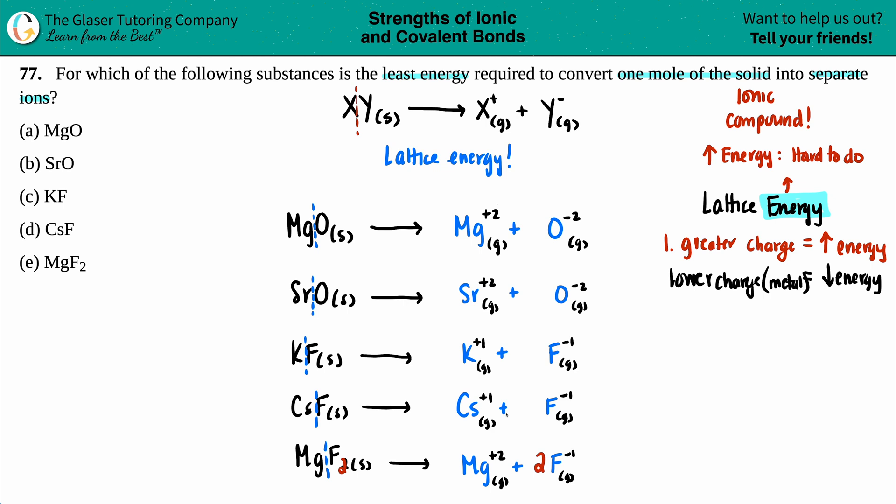Looking at the metal: +2, +2, +1, +1, +2. We could automatically eliminate MgO because we don't want a high charge. The more charge on that metal, the more energy. Right off the bat we get rid of all the +2s. A, B, and E are down. Now you've got a 50-50 shot.